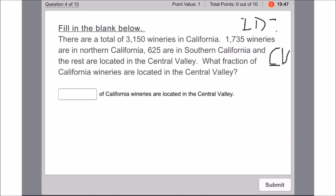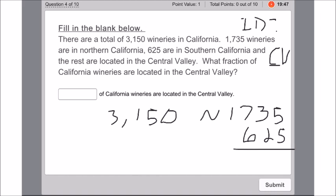The next thing we're going to do is break this down. If we know there's 3,150 total, and the northern is 1,735, and the southern is 625, we can add those together. So that's 10, 5, 6, 13, 23, 60, giving us 2,360.